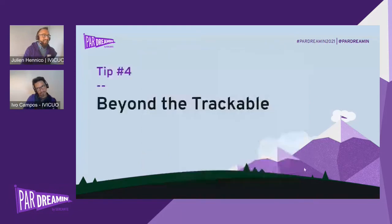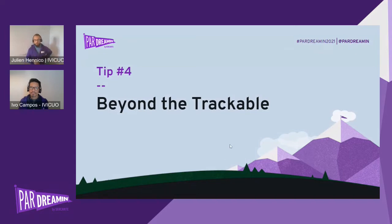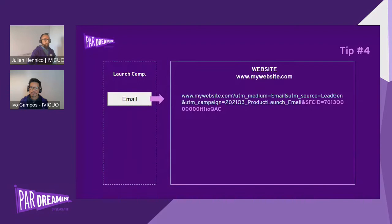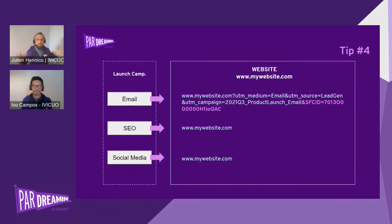Next is tip four: beyond the trackable. What if you can't control the URL parameters? We know how to handle tracked links, but what about SEO, social media, referral, and other cases where people come to your website and you don't have control over those UTM parameters or any parameters at all?